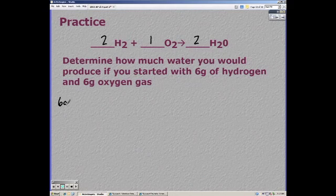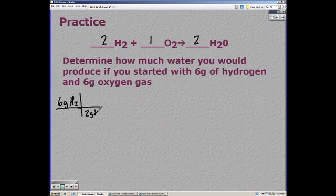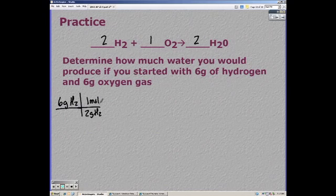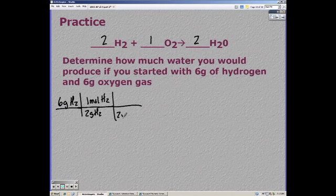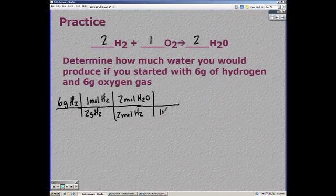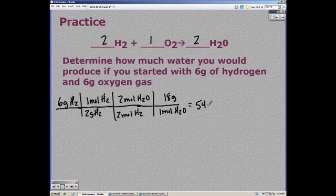Then converting your 6 grams of hydrogen to grams of water should have given you 54 grams of water.